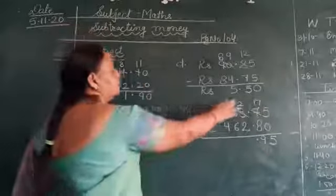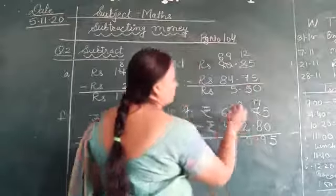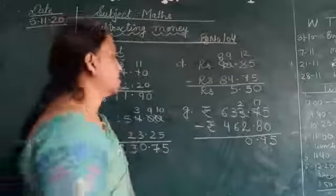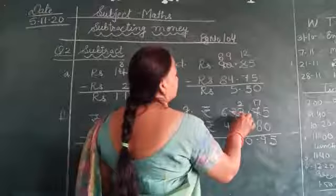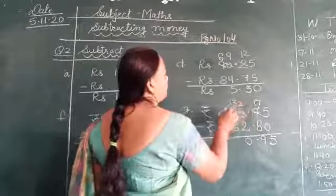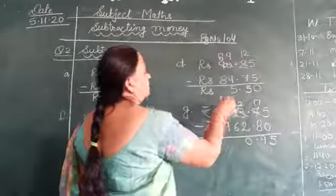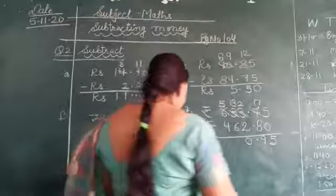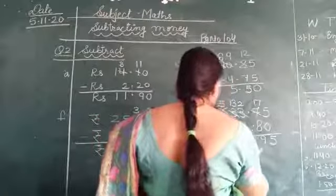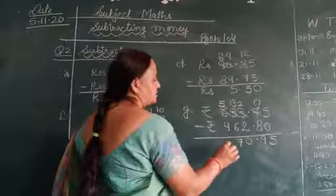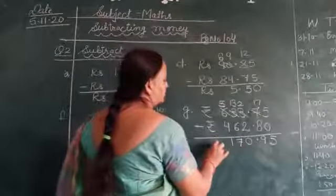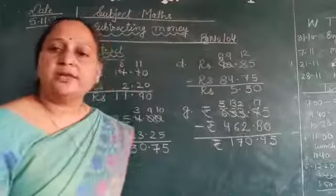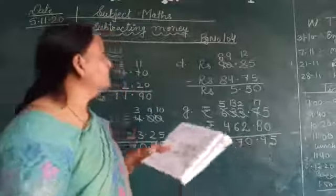We put the decimal. Now 2 minus 2, same number is 0. 3 minus 6, 3 is less than 6, so we cannot subtract it. So we have to borrow and make it 13. And here is 5. 13 minus 6 is 7. And 5 minus 4 is 1. So our answer is 170 rupees and 95 paise.